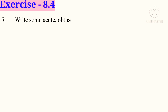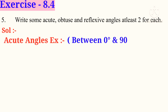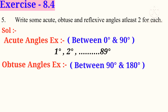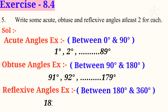Now fifth problem: write some acute, obtuse, and reflex angles, at least two for each. Acute angles example — it lies between 0 degrees and 90 degrees, so: 1 degree, 2 degrees, and so on up to 89 degrees. Obtuse angles example — this angle lies between 90 degrees and 180 degrees, so: 91 degrees, 92 degrees, and so on up to 179 degrees. Reflex angles example — it lies between 180 degrees and 360 degrees, so: 181 degrees, 182 degrees, and so on up to 359 degrees.